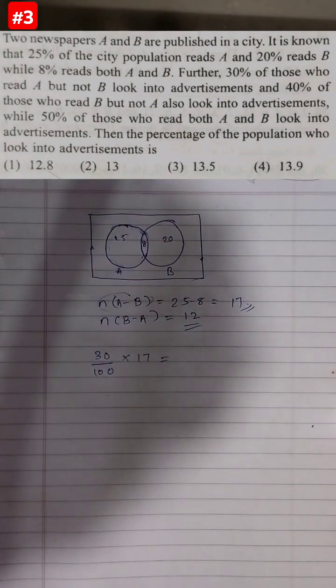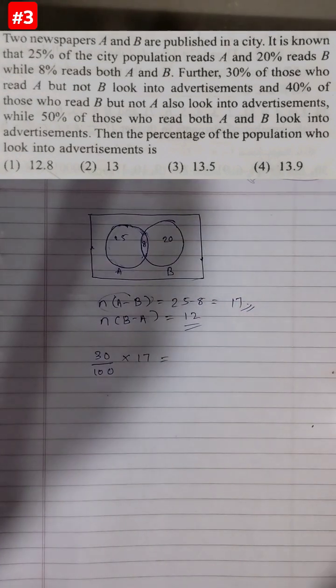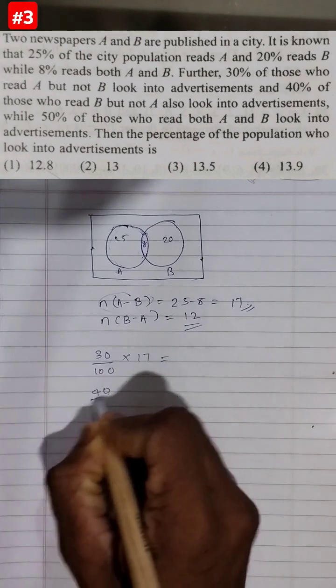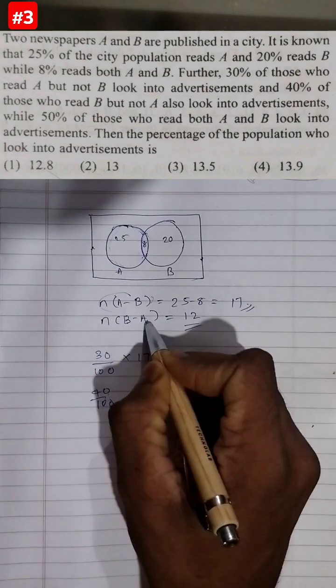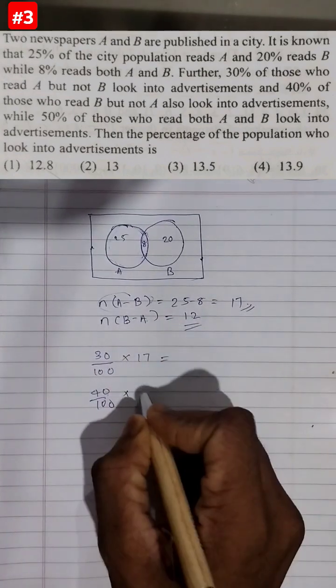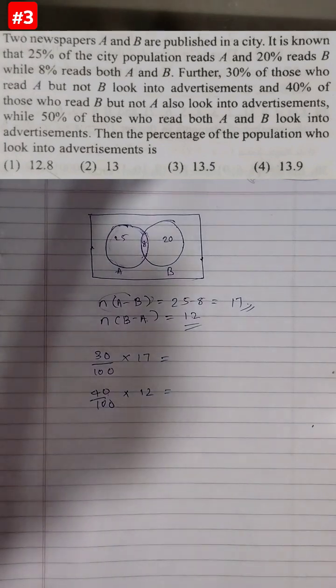40% of those who read B but not A also look into advertisements. That means 40 by 100 of B but not A, that is 12, is also looking into advertisements.